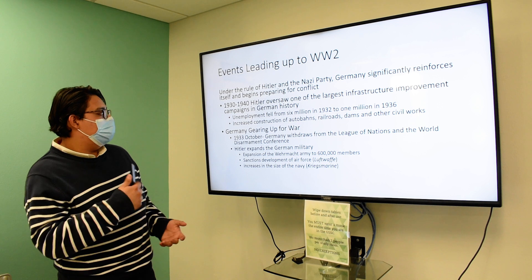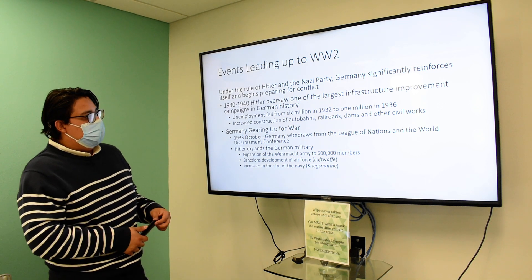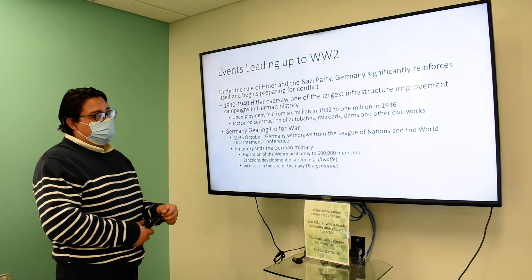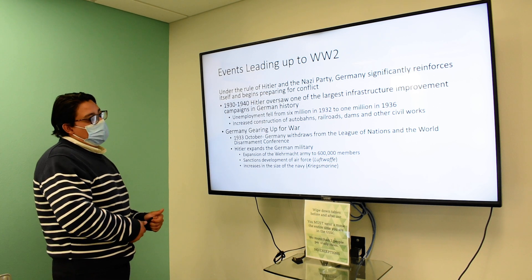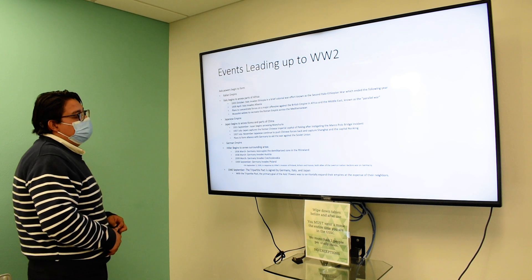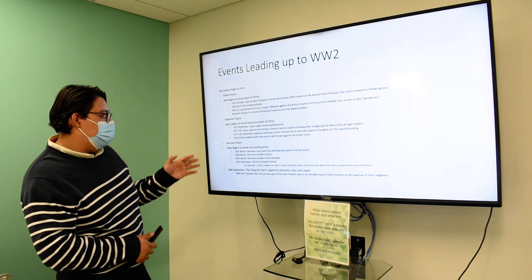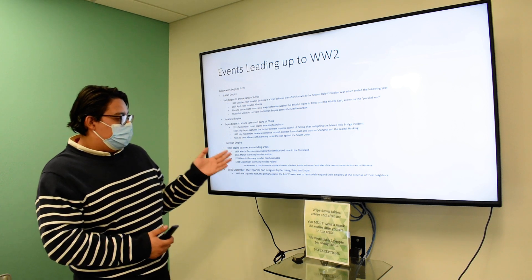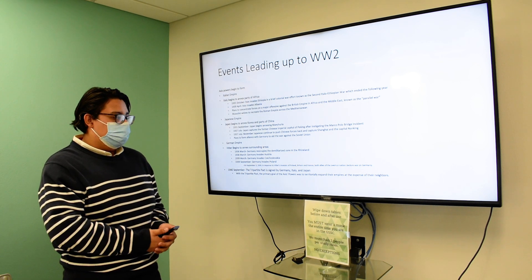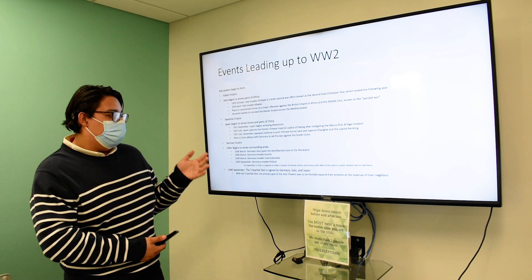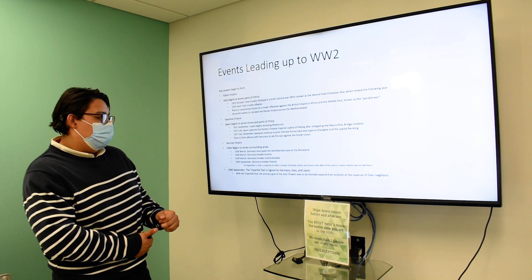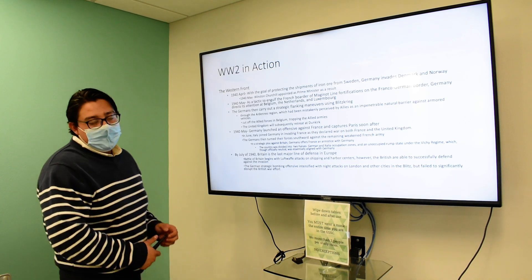Under the rule of Hitler, the Nazi party significantly reinforces itself — unemployment drops from six million to one million. He's really putting everyone to work and gearing up the country for war, expanding the military greatly. At the same time, we see the Axis powers forming — Italy, Japan, and Germany — united by the Tripartite Pact. They all share the goal of expanding their empires at the expense of their neighbors. When Hitler invades Poland in 1939, France and Britain declare war.